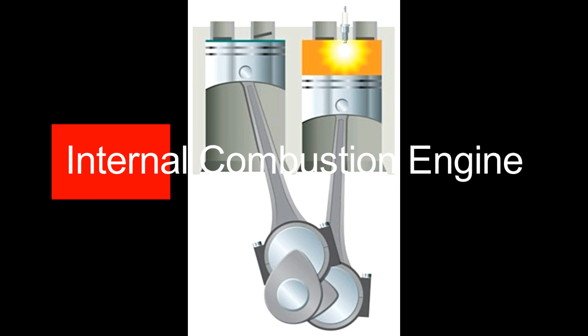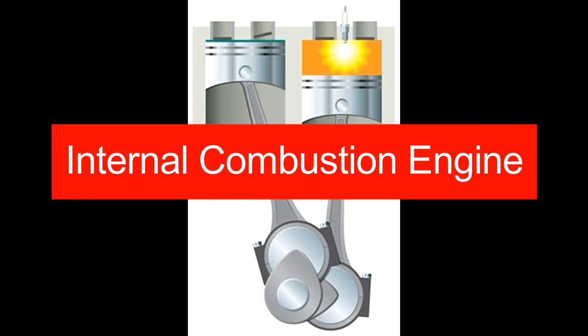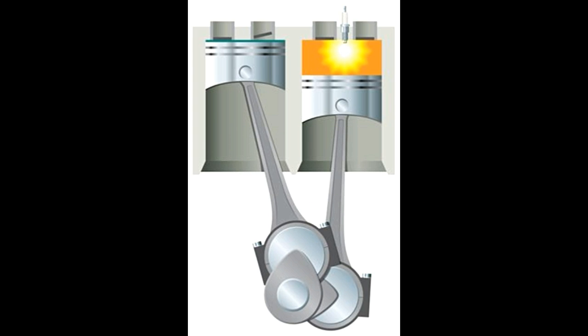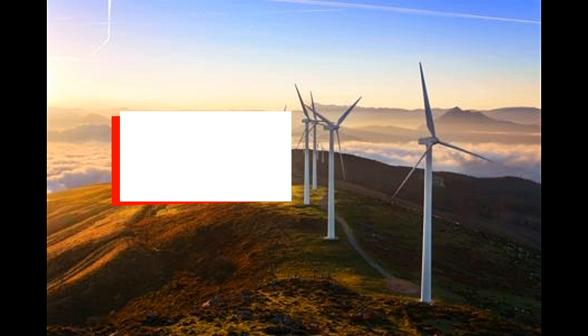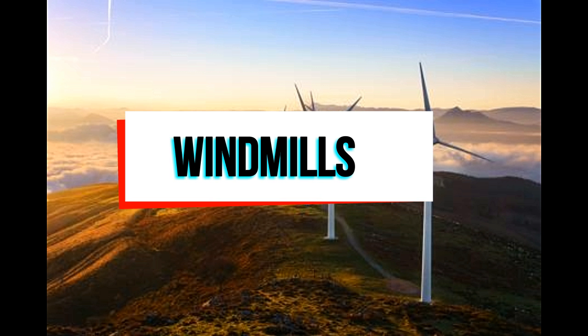In an internal combustion engine, chemical energy is converted into mechanical energy. This conversion is achieved by the burning of fuel, and the mechanical energy produced is then used to set the vehicle in motion.